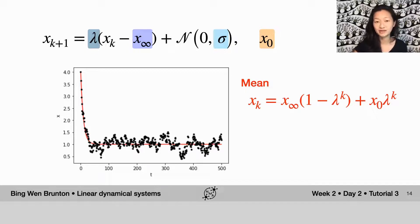What you saw in the previous part of this tutorial is that the mean of this OU process follows the analytic solution for the deterministic part of it. This is what I'm plotting as the red line here. But what about the variance?